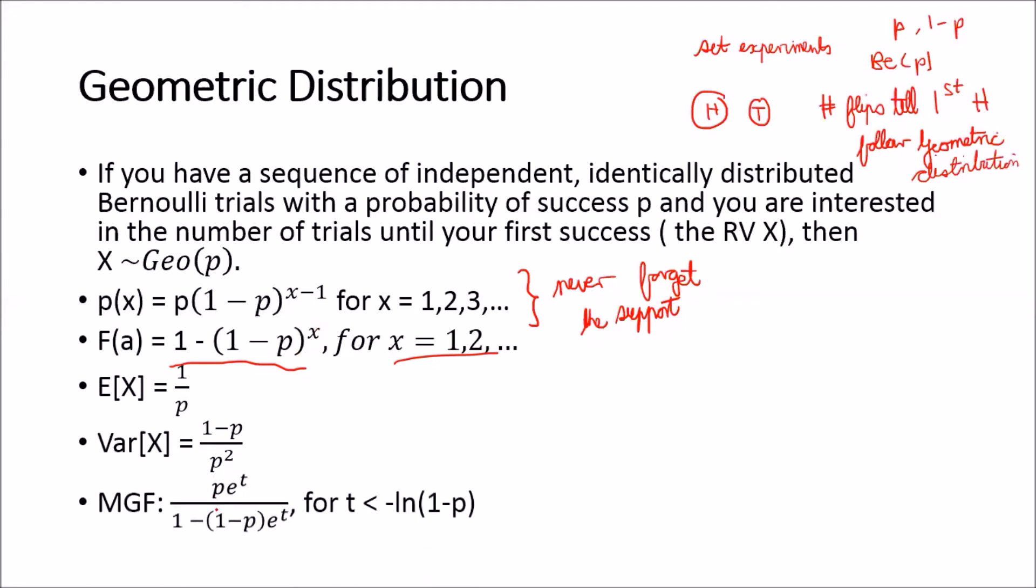The variance of x is (1 minus p) over p squared. And lastly, the moment generating function is given by p times e to the t over (1 minus (1 minus p) times e to the t). And it's valid for t is less than negative ln of p. So these are the characteristics of the geometric distribution.